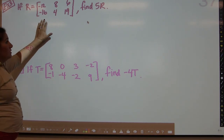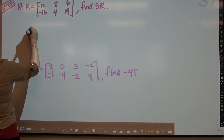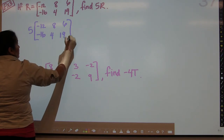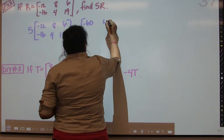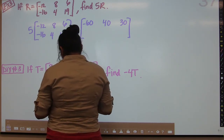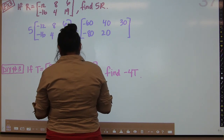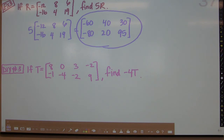They give us matrix R and ask us to find 5R. When multiplying by a scalar, you distribute the scalar to all elements inside the matrix. So 5 times negative 12 is negative 60; 5 times 8 is 40; 5 times 6 is 30; 5 times negative 16 is negative 80; 5 times 4 is 20; and 5 times 19 is 95. The result is the matrix: negative 60, 40, 30, negative 80, 20, 95. It's really easy — just multiply all elements by that number.